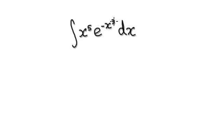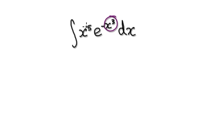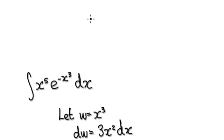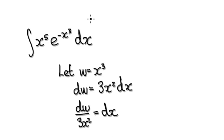Next question — somehow integrate this. Press pause and have a go. To do this, if you let this to be u, and then later on you can visualize this as x to the power of 2 times x to the power of 3. To integrate this, let w be this thing here.